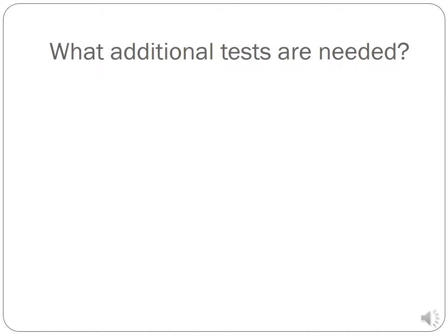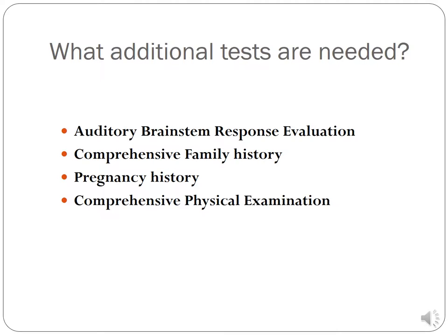What additional tests are needed? Patients with ear anomalies should be carefully assessed for accompanying dysmorphic features. Look for any facial asymmetry, colobomas of the lid, iris or retina, choanal atresia, and jaw hypoplasia. A thorough assessment for any of those additional anomalies is needed — I have a slide coming up with pictures of those findings as well.